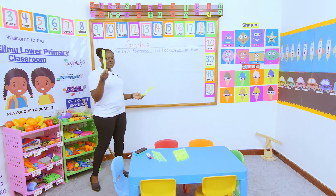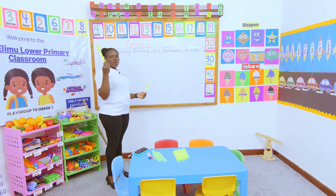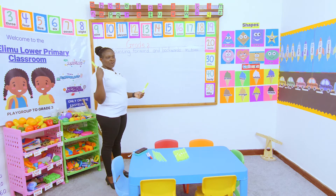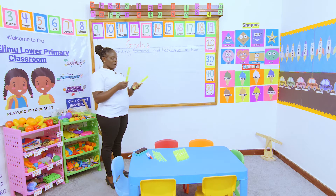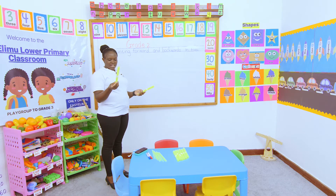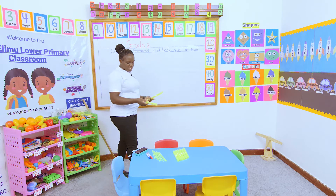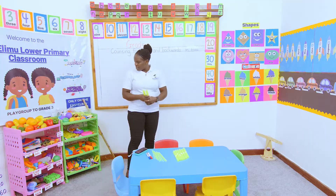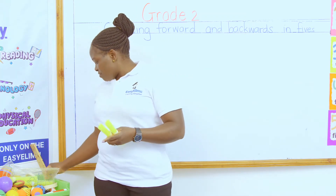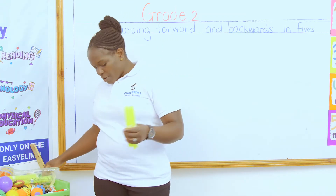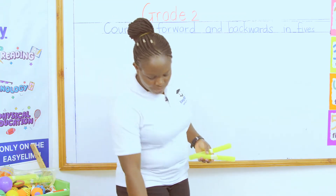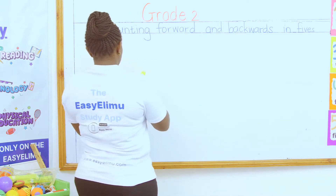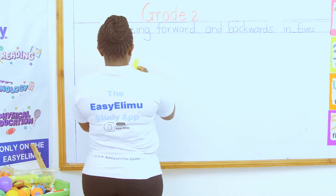What does this one represent? This one represents one bundle of ten sticks. What about this one? Another bundle of ten sticks. Now I've been told: count from 55. We are counting from which number? From 55.